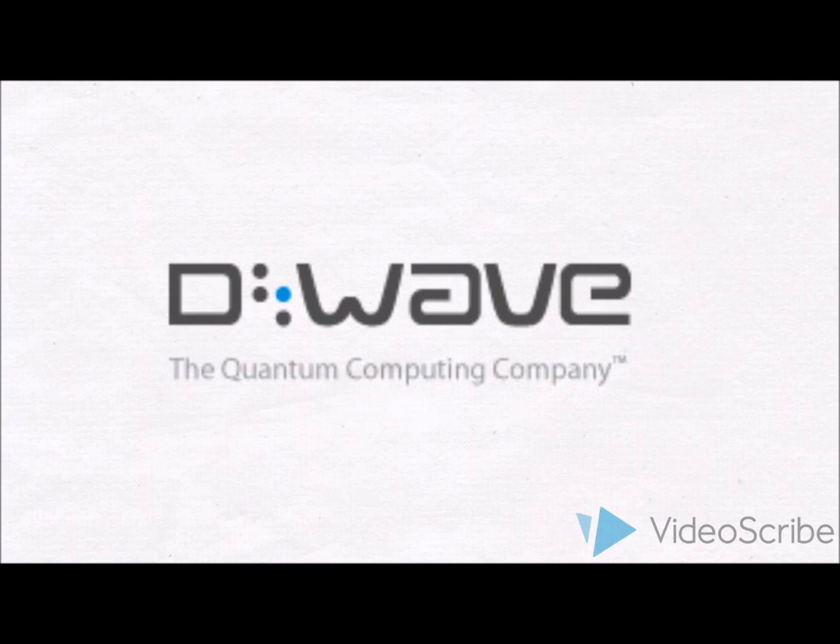Currently we have quantum annealing computers. These are already commercial products, but D-Wave, the company that sells them, sells them for a lot of money. Google bought one for $15 million.